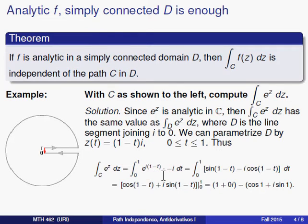So parameterizing, sticking our parameterization into the function, integrating, I'll end up with this value, one minus the cosine of one, minus i times the sine of one. Right, well that's potentially very useful.